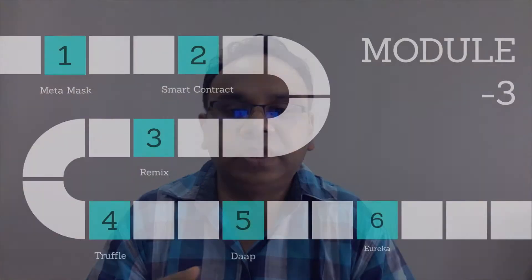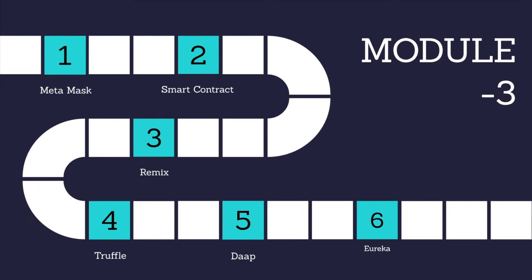Continuing to Module 3. In this module, we have started with a video on how to install MetaMask, what are the basics of a smart contract and a Bitcoin structure. The complete lesson plan covers MetaMask, the smart contract, the Remix IDE, how to use Truffle, how to build a decentralized application, and finally we'll be using that decentralized application. So this Module 3 will have a lot of hands-on and a lot of learning.